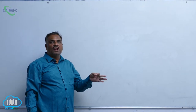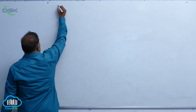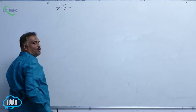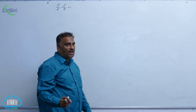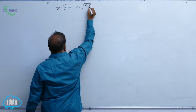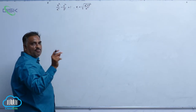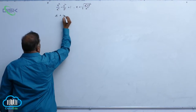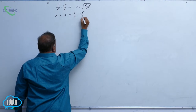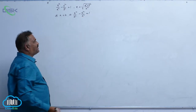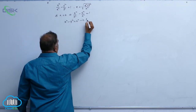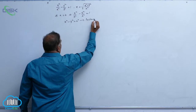A new curve called rectangular hyperbola. If you take x² / a² − y² / b² = 1, which is the standard equation of hyperbola, with eccentricity √(a² + b²) / a, by chance if a is equal to b, then this equation reduces to x² / a² − y² / a² = 1, that is x² − y² = a². This is called rectangular hyperbola.